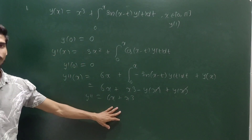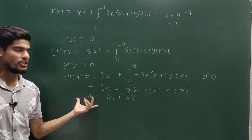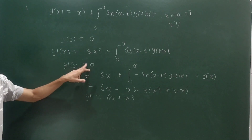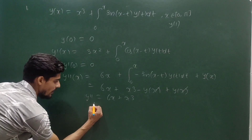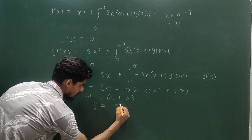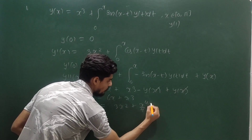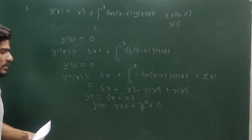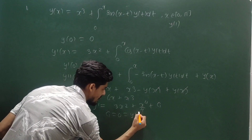Now this is a second-order linear differential equation with two initial conditions: y(0) = 0 and y'(0) = 0, so it is easy to solve. Integrating y'' = 6x + x³, we get y' = 3x² + x⁴/4 + C₁. Applying y'(0) = 0 gives C₁ = 0.